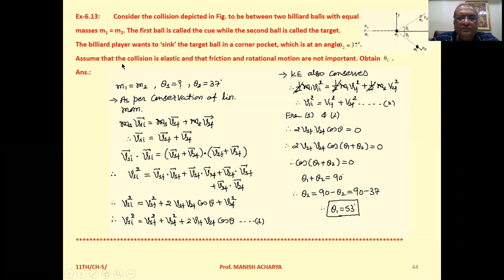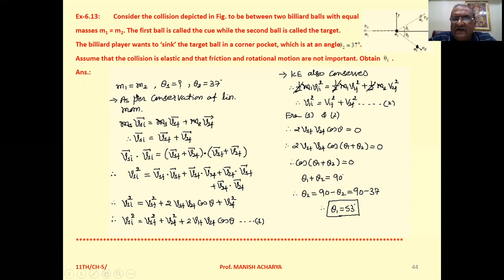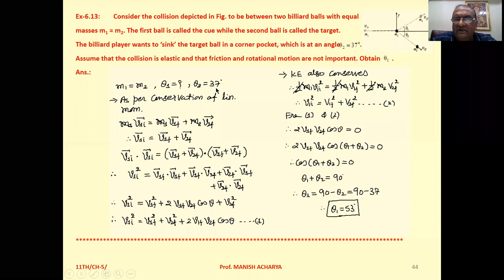Assume that the collision is elastic and that friction and rotational motion are not important. We need to obtain theta 1. The masses are the same: M1 equal to M2. Theta 1 is what we want to find, and theta 2 is given as 37 degrees.